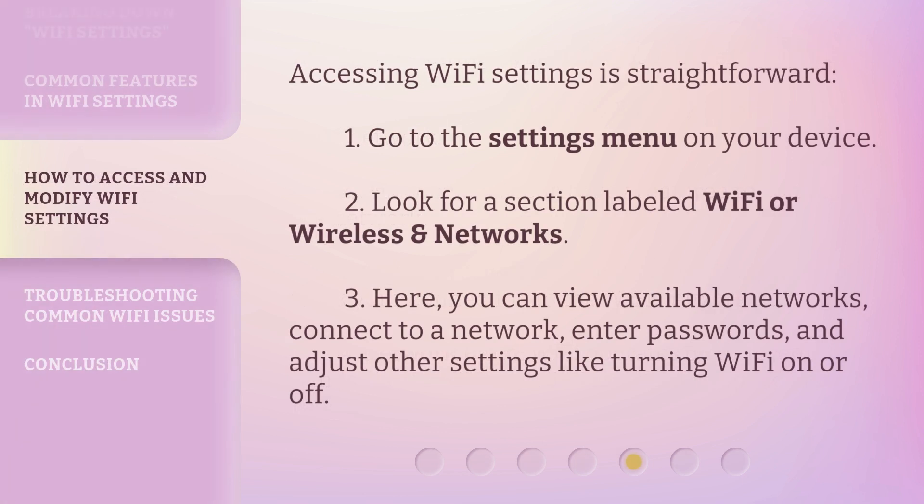Accessing Wi-Fi settings is straightforward. 1. Go to the settings menu on your device. 2. Look for a section labeled Wi-Fi or Wireless and Networks. 3. Here, you can view available networks, connect to a network, enter passwords, and adjust other settings like turning Wi-Fi on or off.